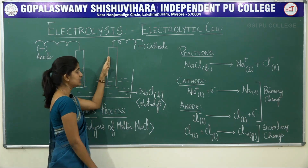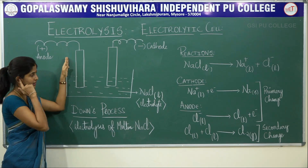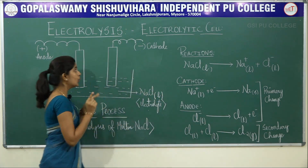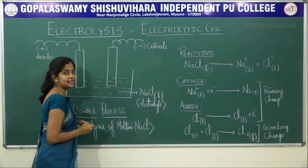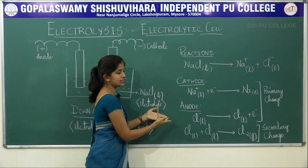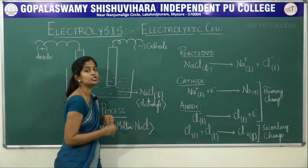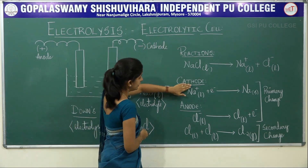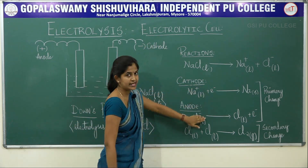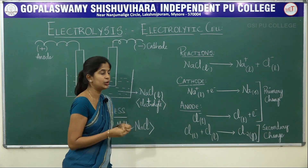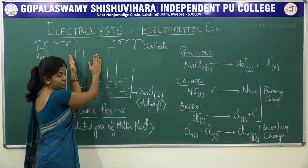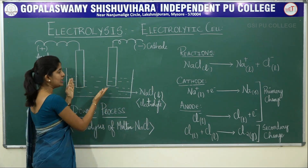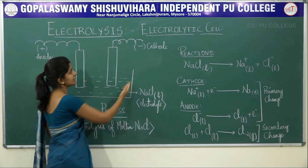At the cathode, metallic sodium deposits; at the anode, chlorine gas is liberated. Both reduction and oxidation reactions happen only after passing electricity — you are utilizing electrical energy to drive this non-spontaneous redox reaction. Electrolytic cells involve redox reactions that are non-spontaneous and occur due to the passage of electricity. Without electricity, there would be no net redox reaction, and such cells are called electrolytic cells.